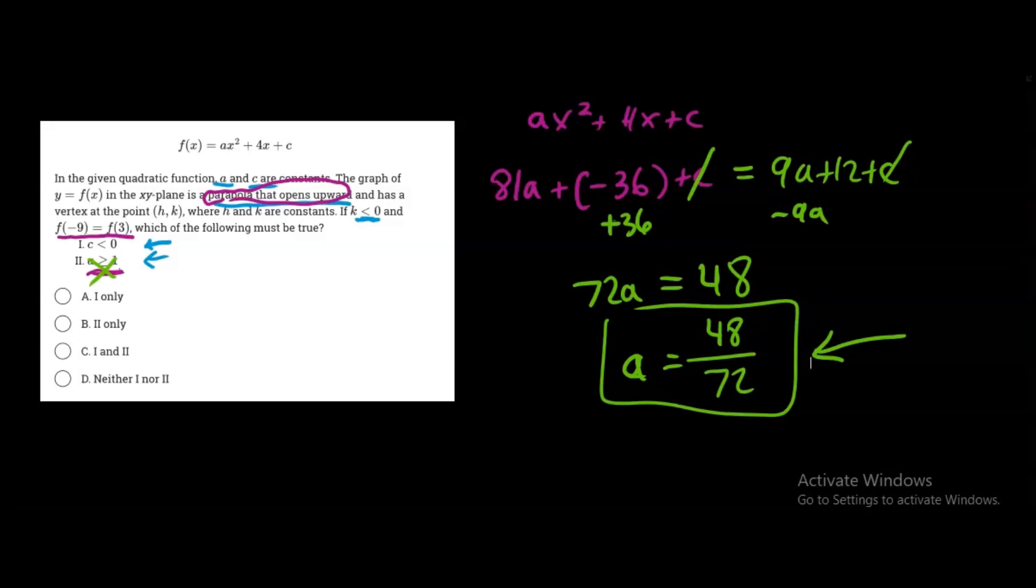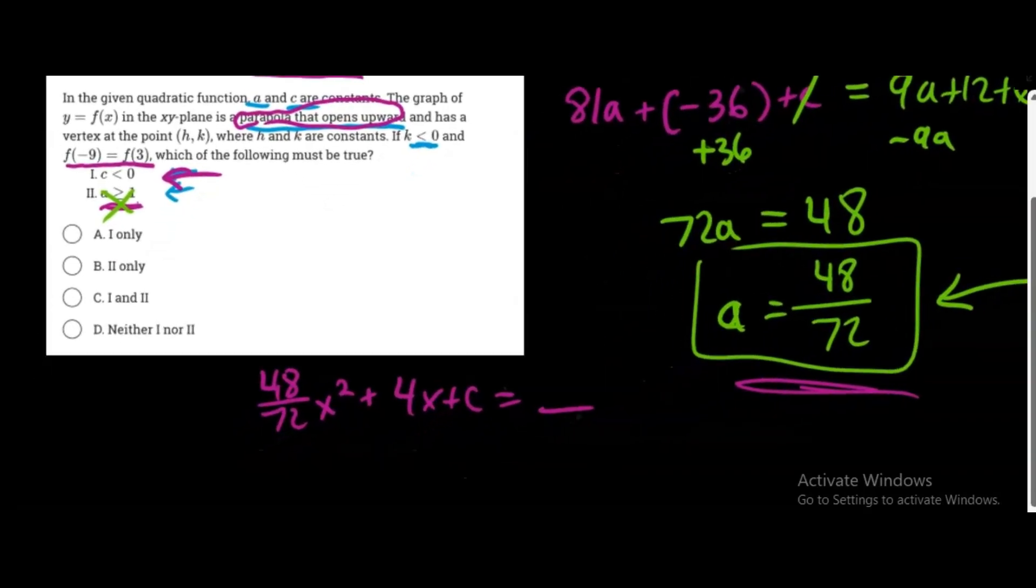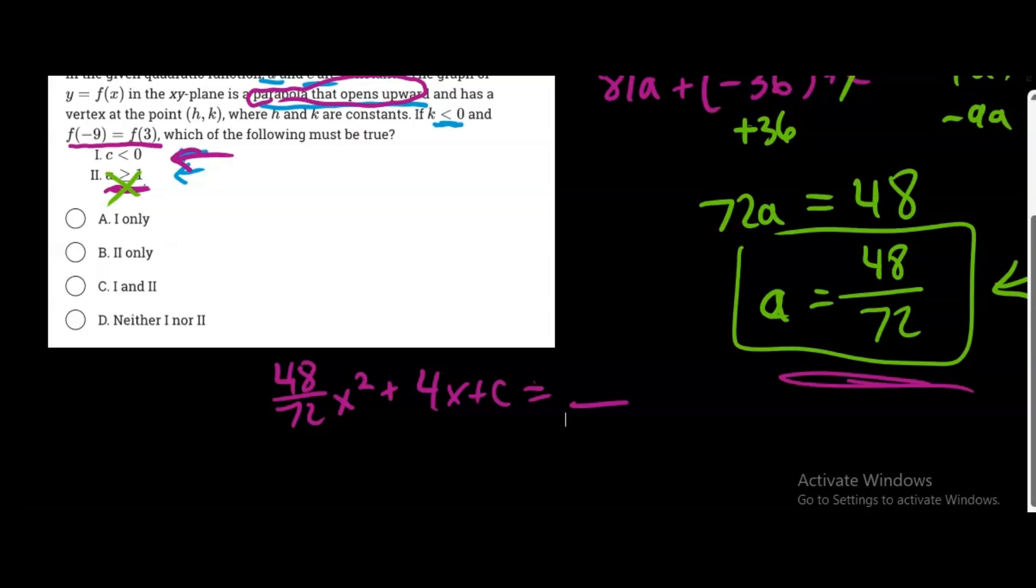So now what we need to do is prove the first clause, right? So is this first clause true? Well, we already have the standard equation here, and we know the a value. So let's just write out what we know. So we have 48 over 72 times x² plus 4x plus c equals something. So the problem here is we have too many missing variables, right? We need a value to plug in for x, except we don't know c. So we can't find whatever the outcome is, the y value.